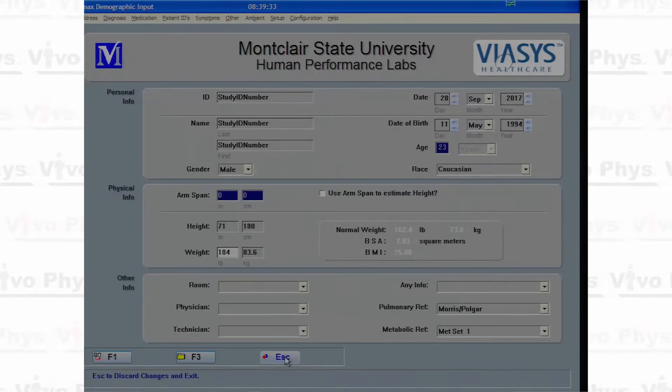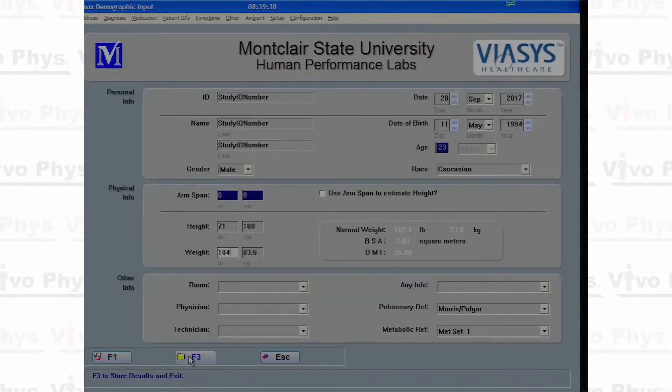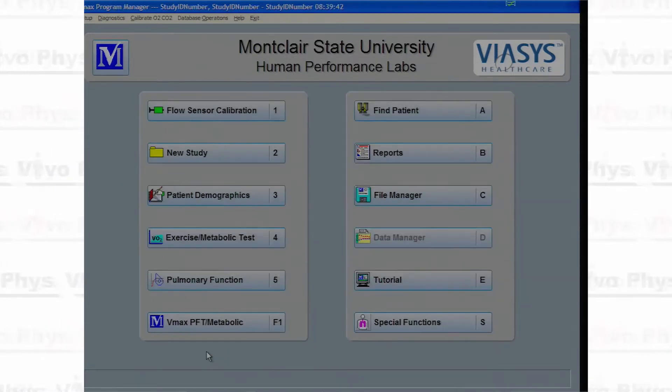In this software, when you're trying to store whatever's in the current dialog, hover the mouse across the bottom of the screen where those buttons are, and it will tell you what those buttons do. Make sure that you click the one that says store and exit, and that will get you into the screen where you can go into the exercise test.